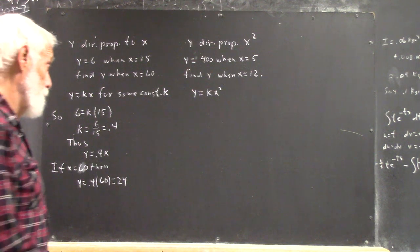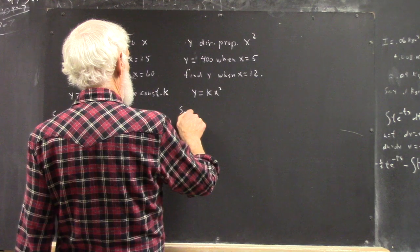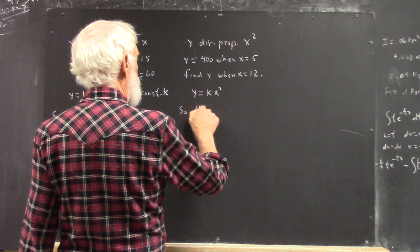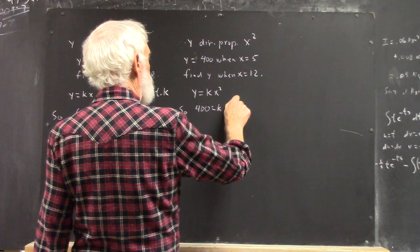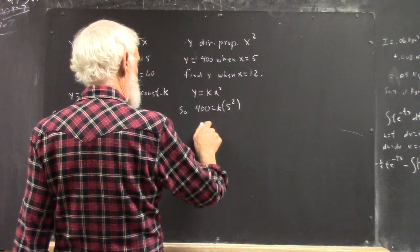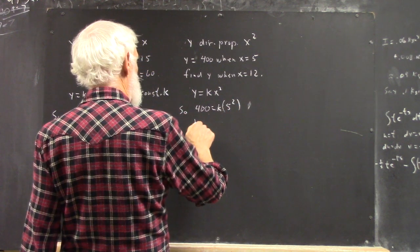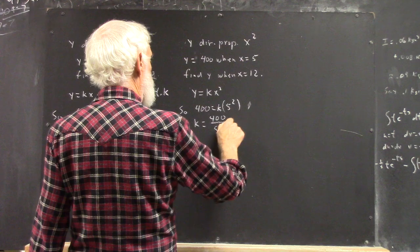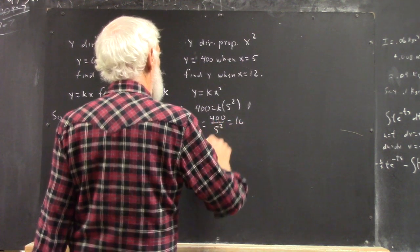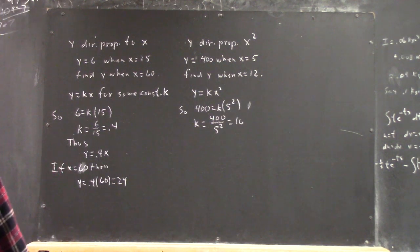Something that's fairly likely to occur on the test. Okay, well, we know that y is 400 when x is 5. Y is 400 over 5 squared, which is pretty easy to work out. 5 squared is 25.